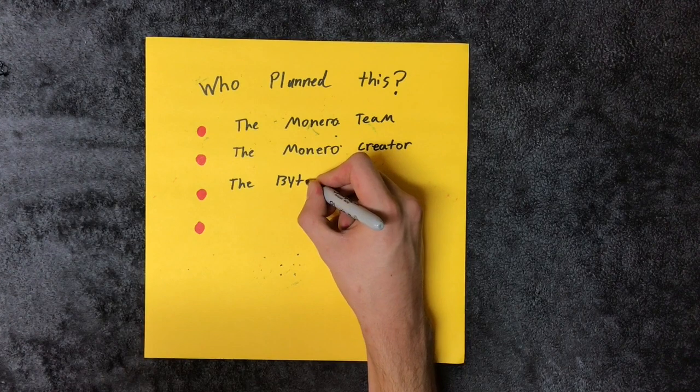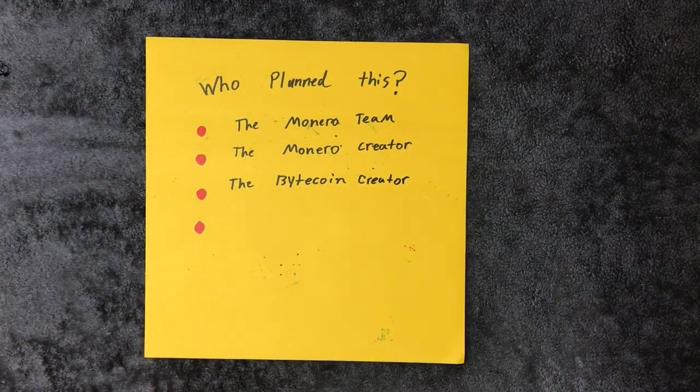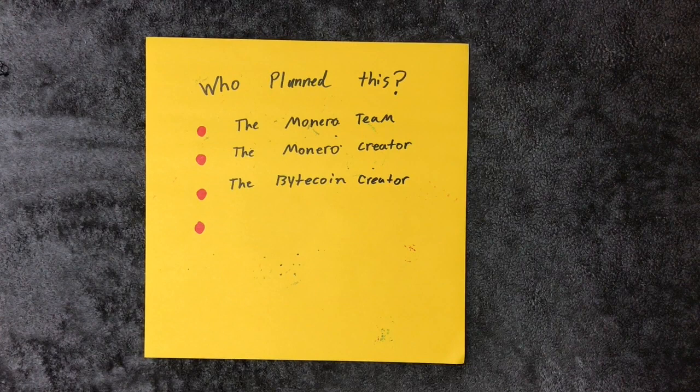Third: Bytecoin's creator knew the whole time. This is my favorite theory, but the least likely. Bytecoin was professionally created. It had great original technology and was inventive. Why would someone create a great coin with a poorly and obviously constructed backstory?